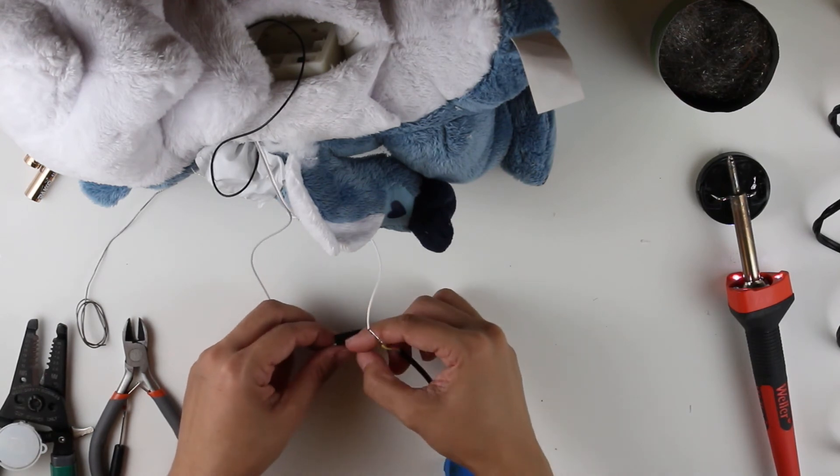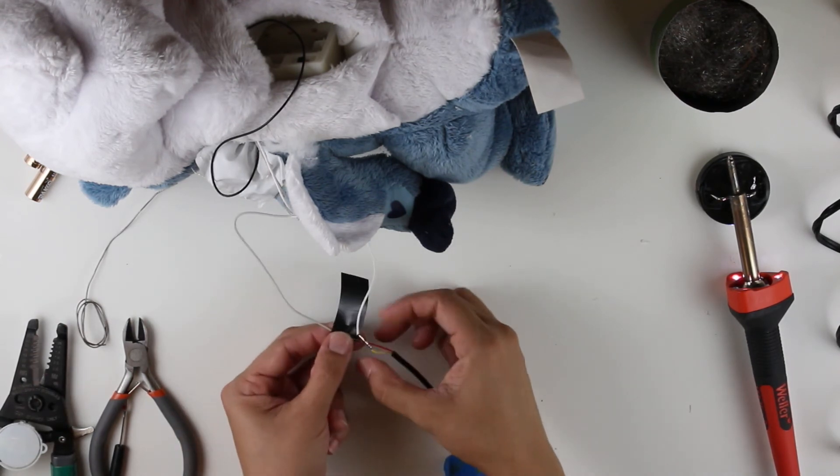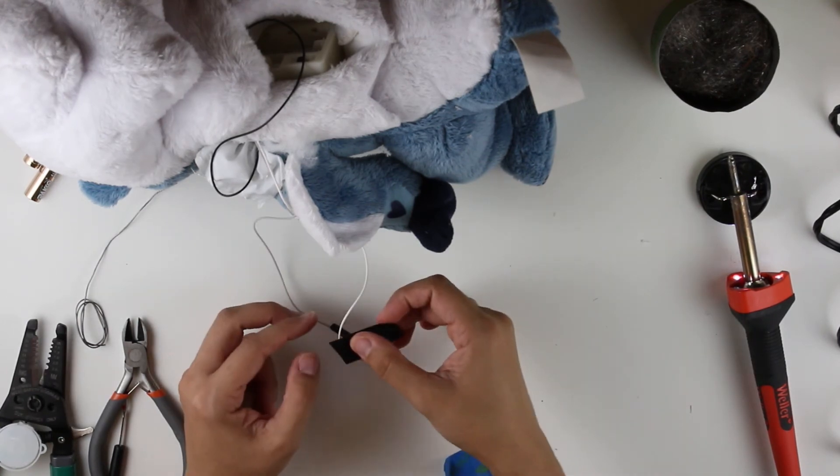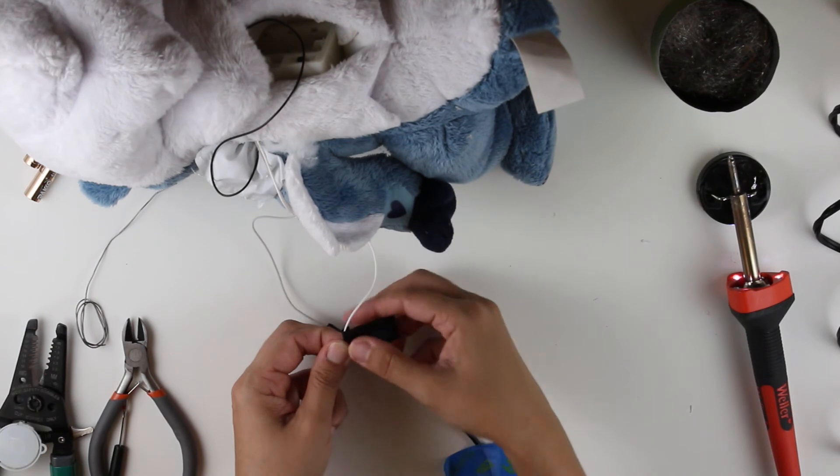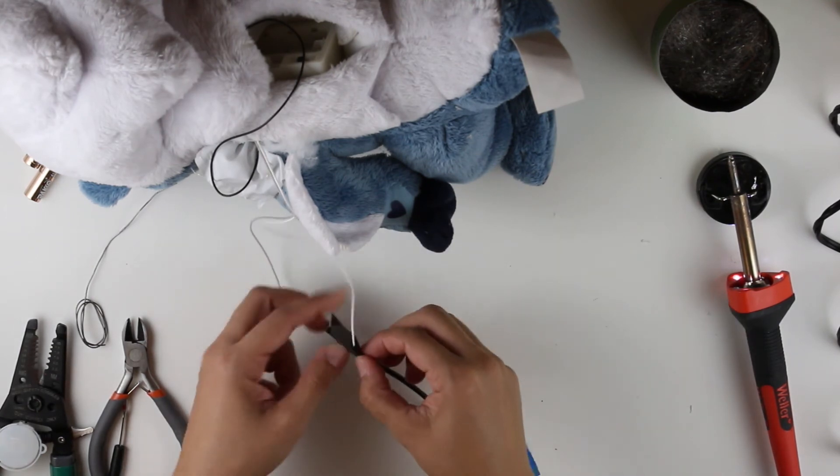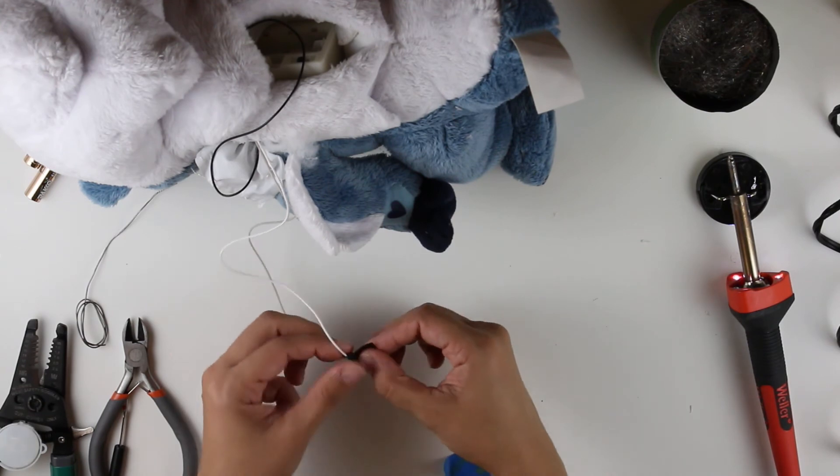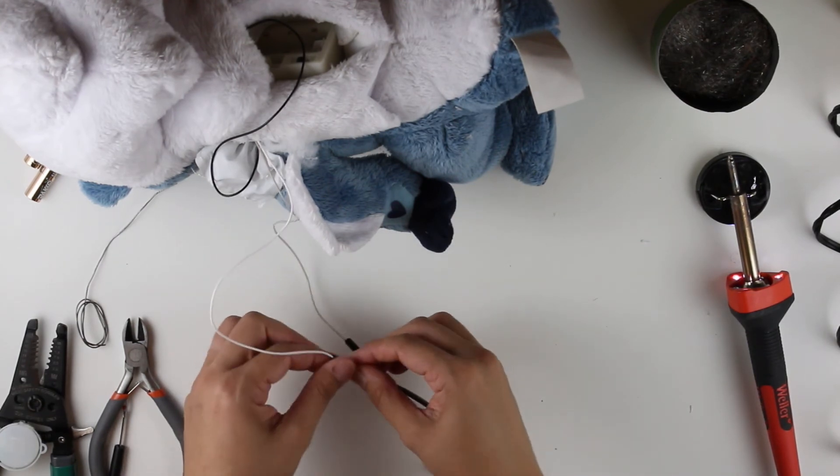Grab some electrical tape and then wrap it once again to secure the connection. You definitely don't want to expose the wires because when they come in contact with one another, it will activate the toy. So we're going to want to make sure that they don't come into contact with one another. Again, we like to use shrink wrap, but if you have electrical tape on hand, that is perfectly fine.